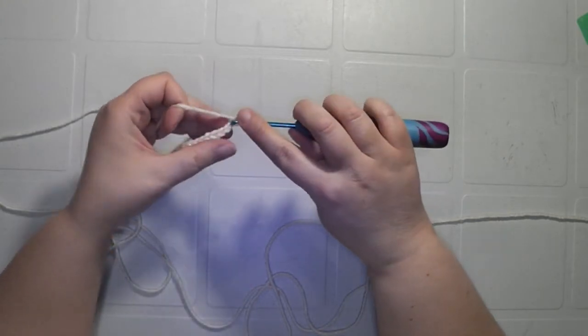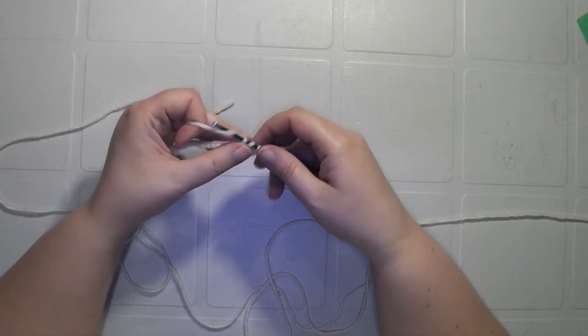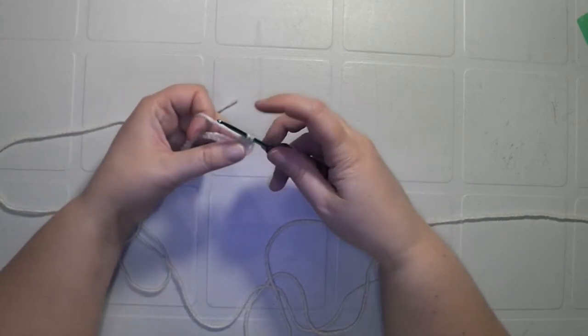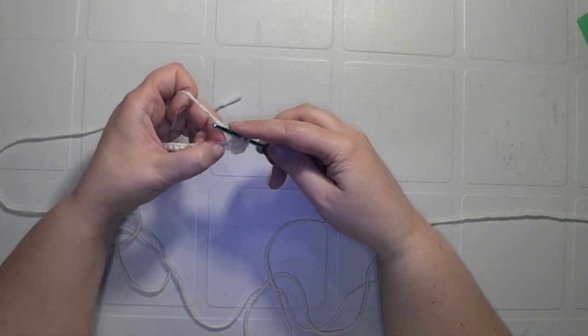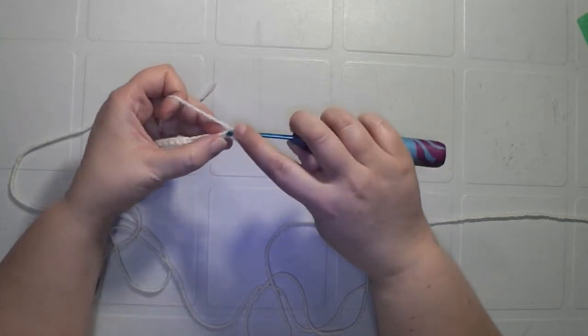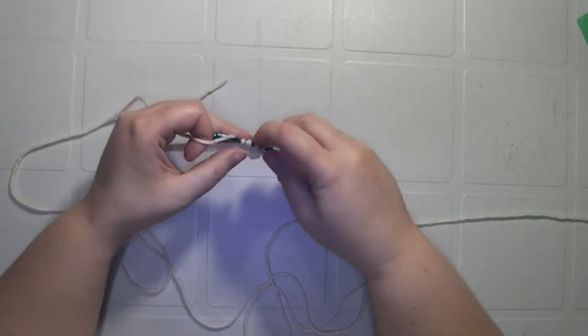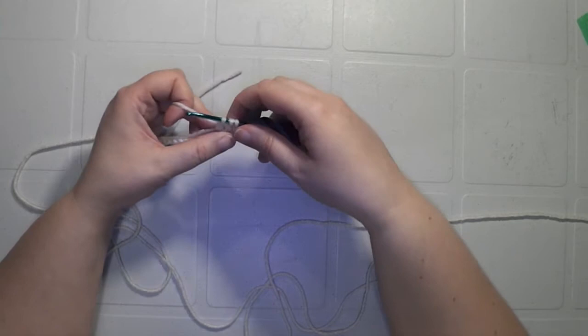Alright, so you double crochet into that first one. And then your next one is you're going to double crochet six together. So you yarn over, pull through and go through that first, the next chain. Yarn over and pull through your first two, but rather than finishing your stitch, you're going to leave those two on there.